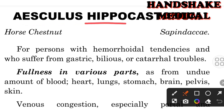Today's topic is Aesculus Hippocastanum. Its prover is Dr. Kule. It is a remedy from the Vegetable Kingdom and it belongs to the family Sapindaceae. Its common name or synonym is Horse Chestnut. Its duration of action is a few hours according to Boericke. Its miasmatic background covers Psora and its temperament is irritable — these are quite irritable people.